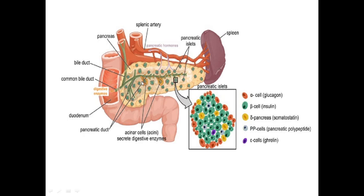Pancreas has two parts: the exocrine part and endocrine part. Today we will be interested in the endocrine part because the endocrine part of pancreas is very important for regulation of sugar level in our blood. The endocrine part has about more than one billion Langerhans islands in one pancreas. First, alpha cells which produce glucagon, which increases sugar level in blood. Next, beta cells produce insulin, which can increase consumption of glucose by peripheral cells and cause decreasing of sugar level.